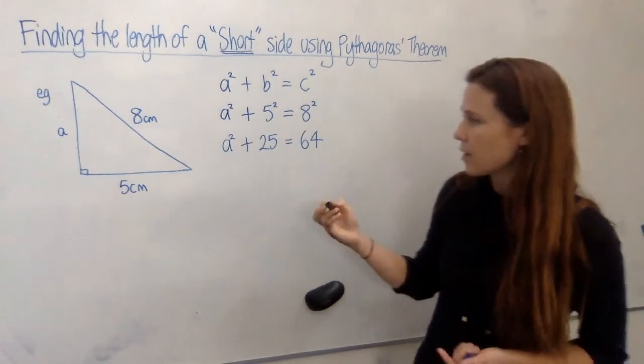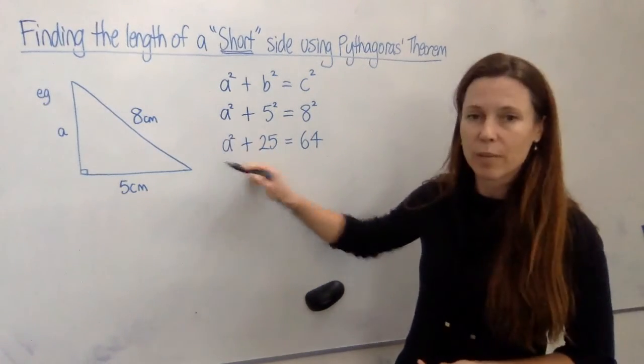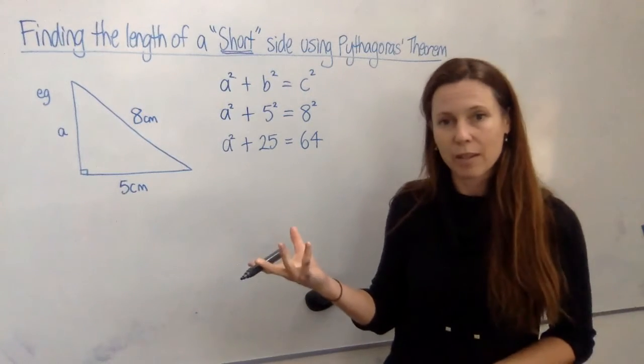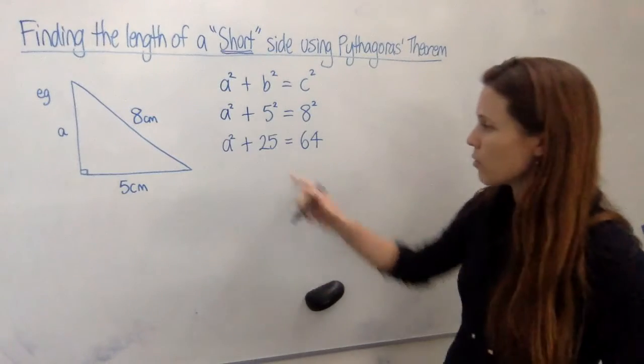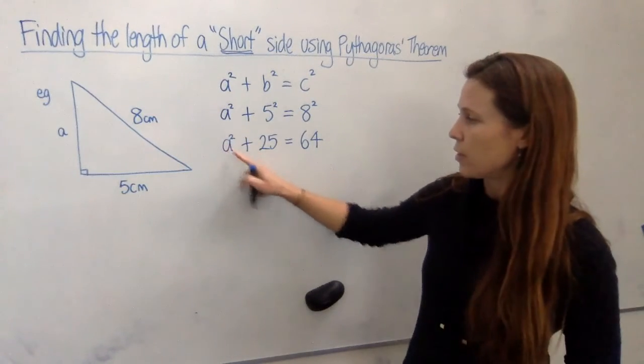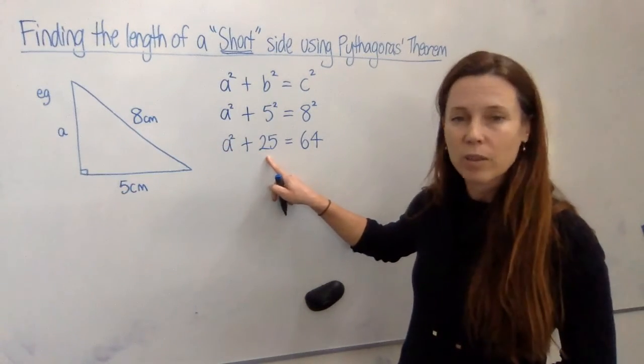Now on the next line, we're trying to get a² by itself so we can see what it is, and then we'll be able to take the square root of it to find out what a might be. So we really want to get this a² on its own. At the moment it's got 25 added to it.